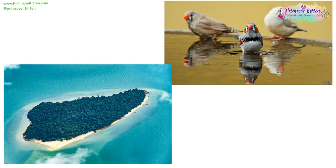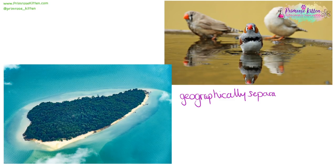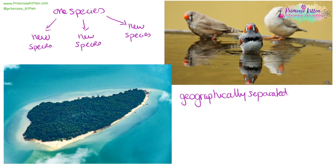When a single species of animals gets geographically separated — this could be because they were on different islands, or there could be a mountain range that pops up in between them — we can end up with speciation, where one species leads to various different species.